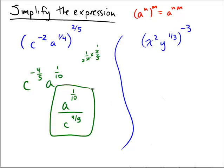Okay, on the right what do we have? Looks like we have x to the 2 to the negative 3, so 2 times negative 3 is negative 6. And then we have y to the 1 third to the negative 3, and 1 third times negative 3 is negative 1.